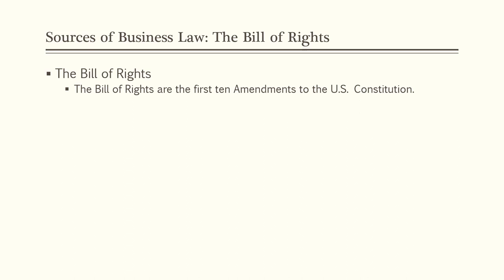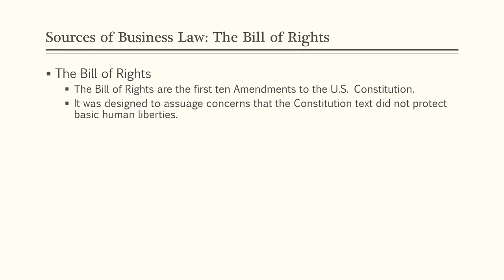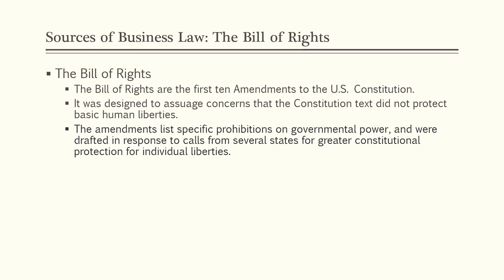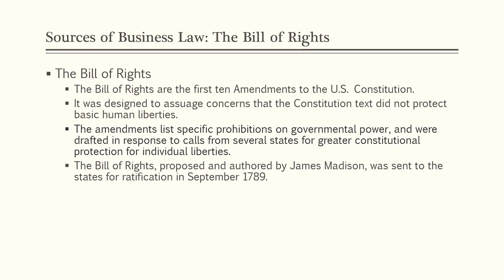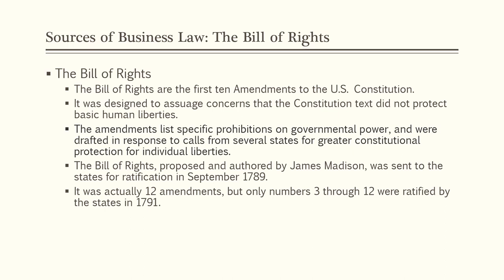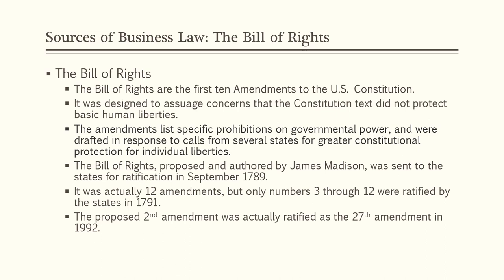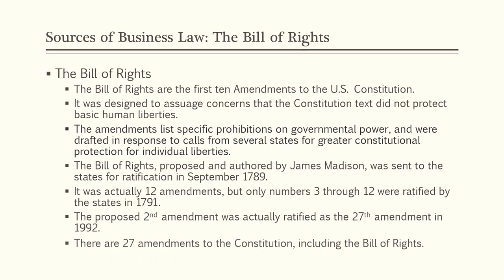The Bill of Rights are the first ten amendments to the U.S. Constitution, designed to protect basic human liberties. The ten amendments list specific prohibitions on governmental power and were drafted in response to calls from several states for greater constitutional protection for individual liberties. The Bill of Rights was proposed and authored by James Madison and sent to the states for ratification in September 1789. Only amendments three through twelve were ratified by the states in 1791. The proposed second amendment was actually ratified as the 27th amendment in 1992 — over 200 years later. There are currently 27 amendments to the Constitution in total.